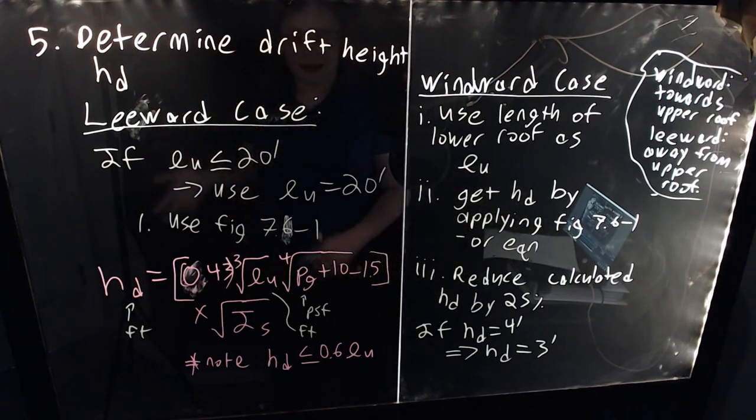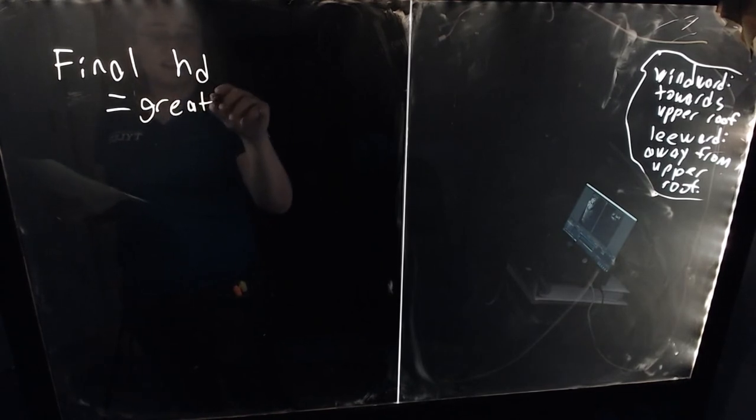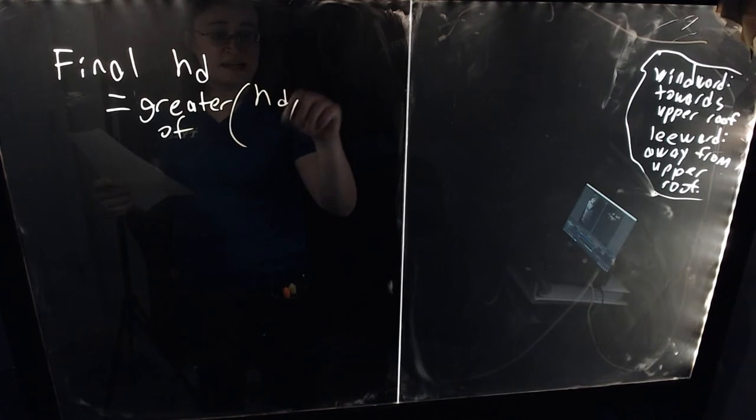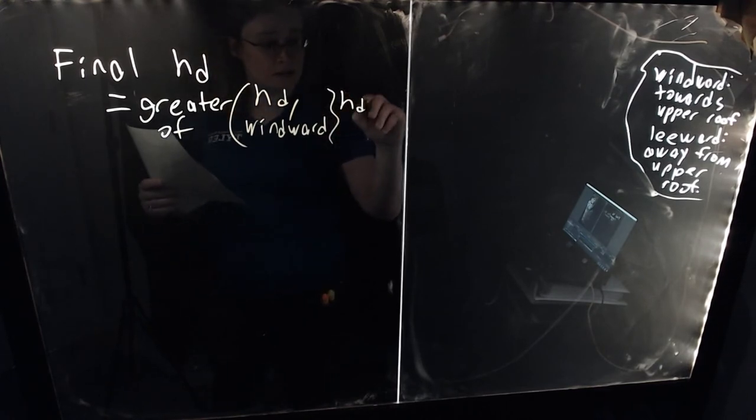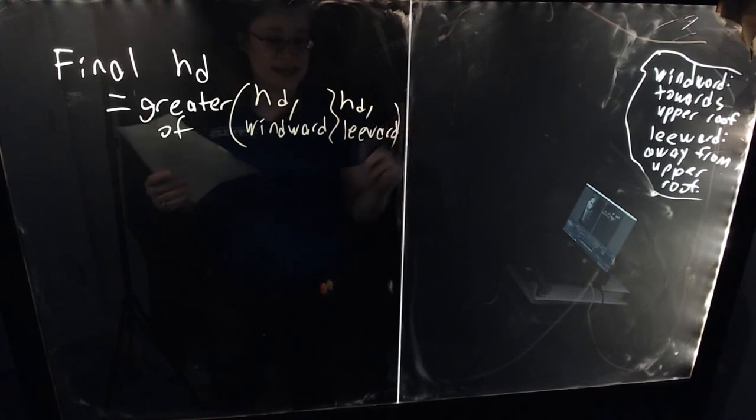We now have two HD values — one for the leeward case and one for the windward case. Since we're not going to design for both simultaneously — the wind can come from either direction at the same location — we simply take the worst case. The final HD is the greater of HD windward and HD leeward.